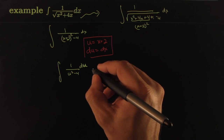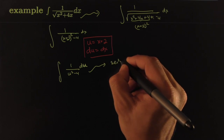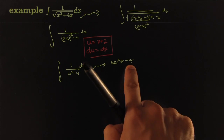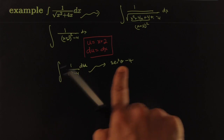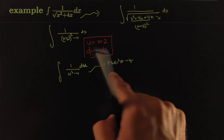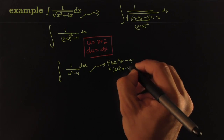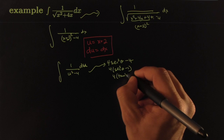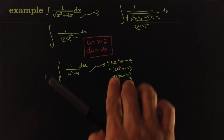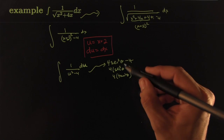Because of that 4, it doesn't match a standard form. It almost looks like sec²θ − 1, except we have minus 4, not minus 1, and that's not helpful. However, if we had a 4 in both places — like 4sec²θ − 4 — that would turn into 4tan²θ, a monomial. So as long as the constants match, we can use a slightly different version of the famous identity.